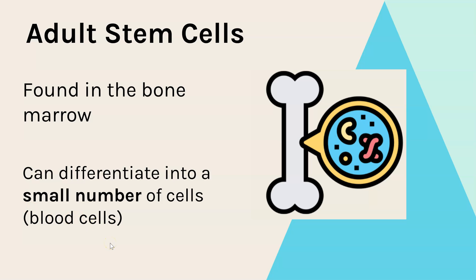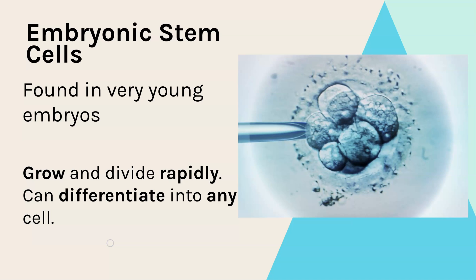Now in humans and other animals, the most useful stem cells are embryonic stem cells and these are found in very, very young embryos. This is shortly after the sperm and egg fertilise and you just have a group of cells. Those stem cells have the ability to grow and divide rapidly into any type of cell.